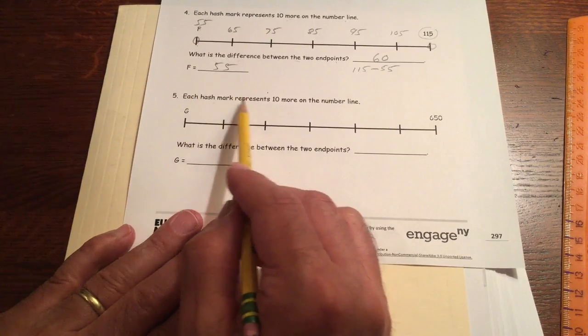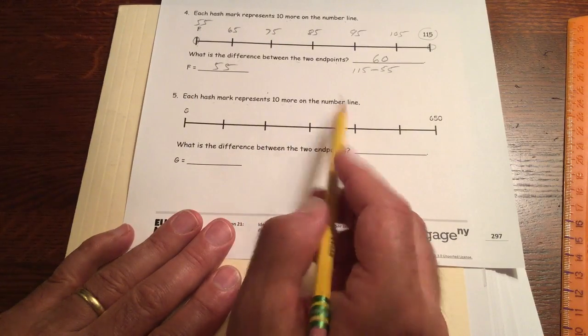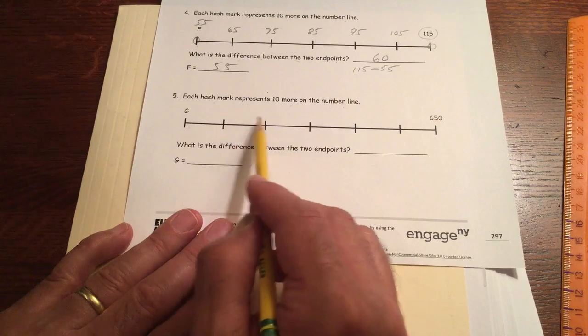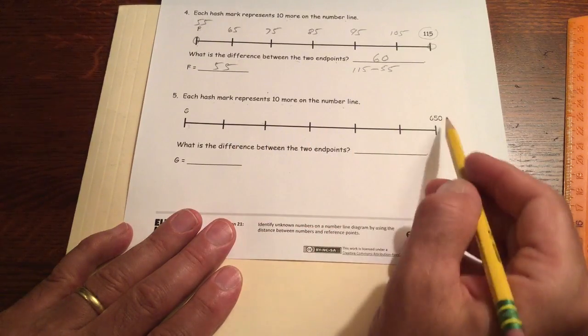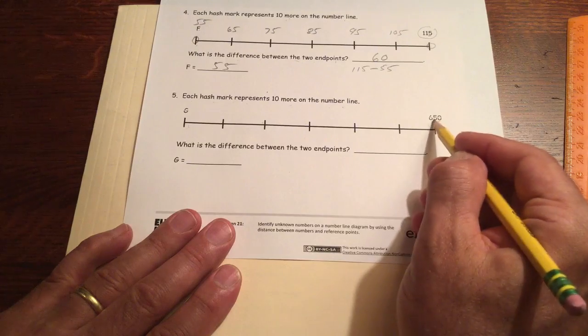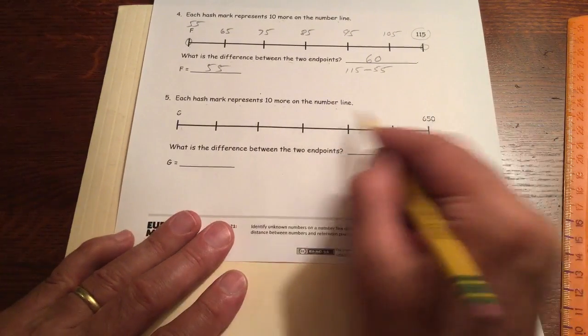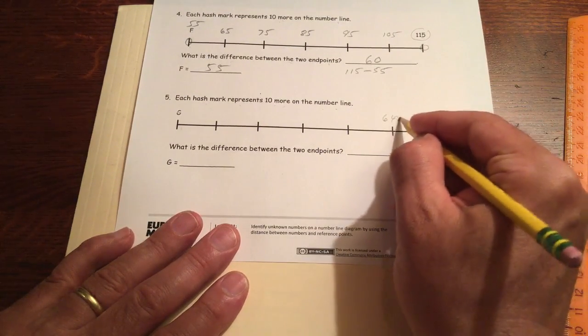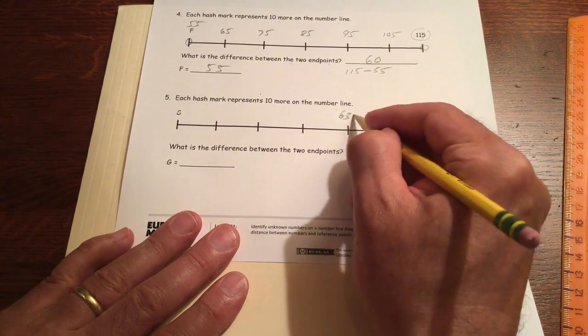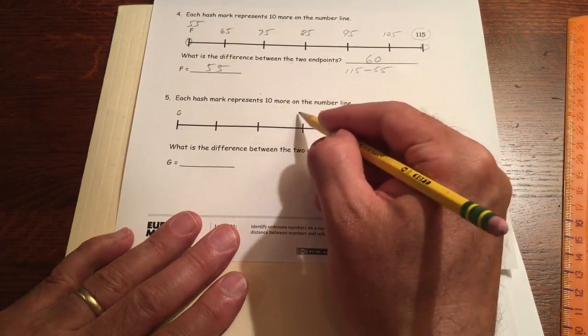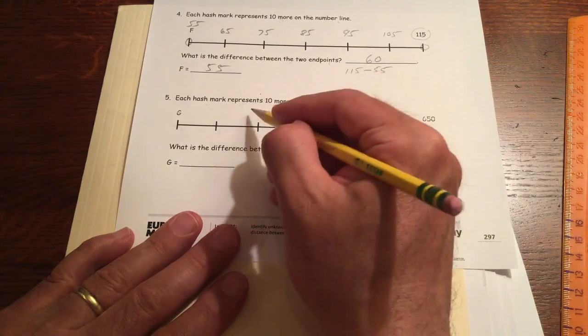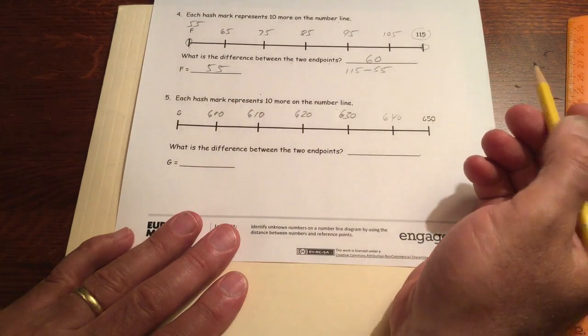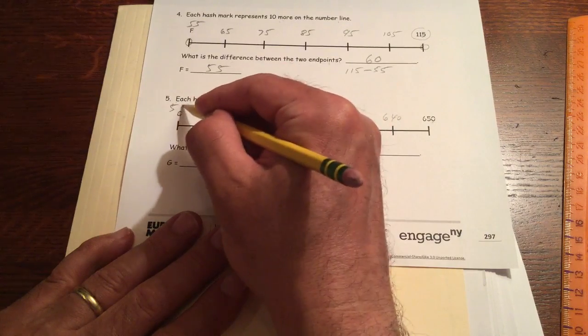And finally, 5. Each hash mark represents 10 more on the number line. So whatever G is, this is kind of the same sort of puzzle it looks like. 10, 20, 30, 40, 50, right? So we have 650 at this end, which means that each one is going going backwards. It's going to be 10 less if we go back. So this is 650. That's going to be 640. And 630. And then 620. 610. And 600. And this last one here is going to be 590.